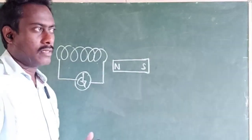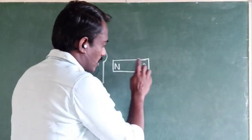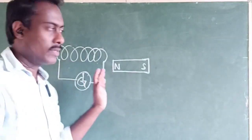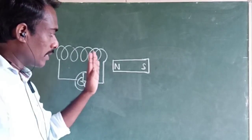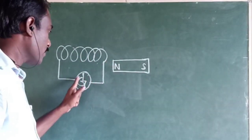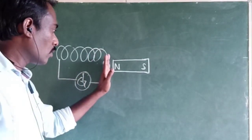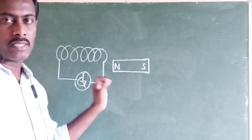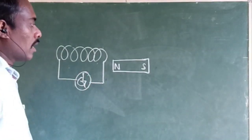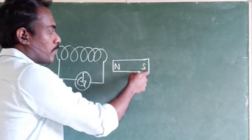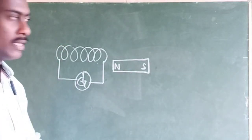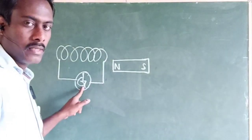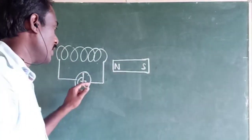We can reverse the situation: keep the magnet fixed and move the coil instead. When the coil is brought near the magnet, it produces a deflection in the galvanometer; when the coil is taken away, the same deflection occurs but in the opposite direction. Similarly, if the south pole of the magnet is brought near the coil, a current is induced, and when it is taken away, a current is induced again.